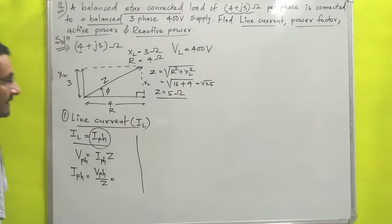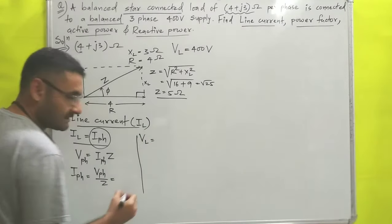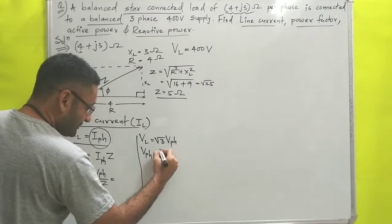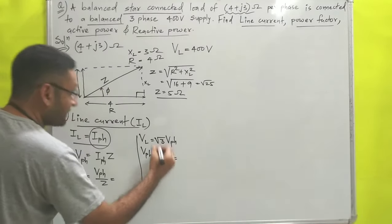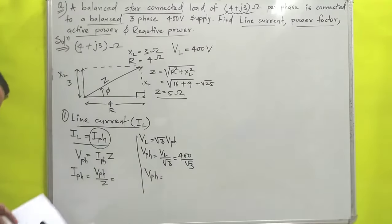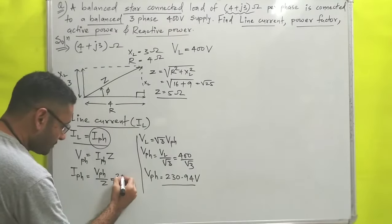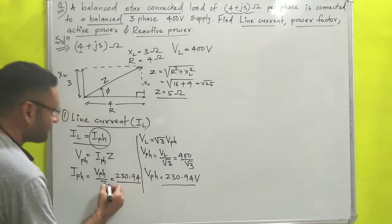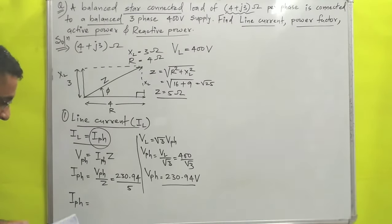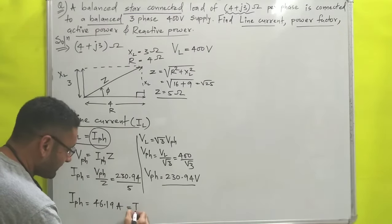Calculating phase voltage: Vph = 400 / √3 = 230.94 volts. Then phase current Iph = Vph / Z = 230.94 / 5 = 46.19 amperes. In a star connection, line current equals phase current, so the line current IL = 46.19 A. This is answer number one.